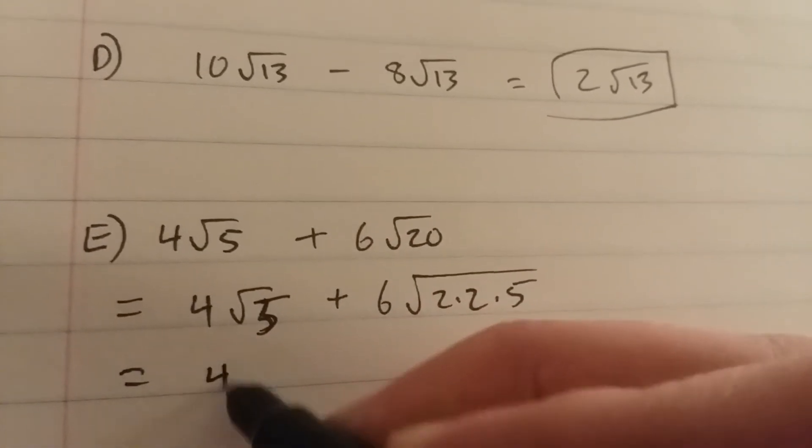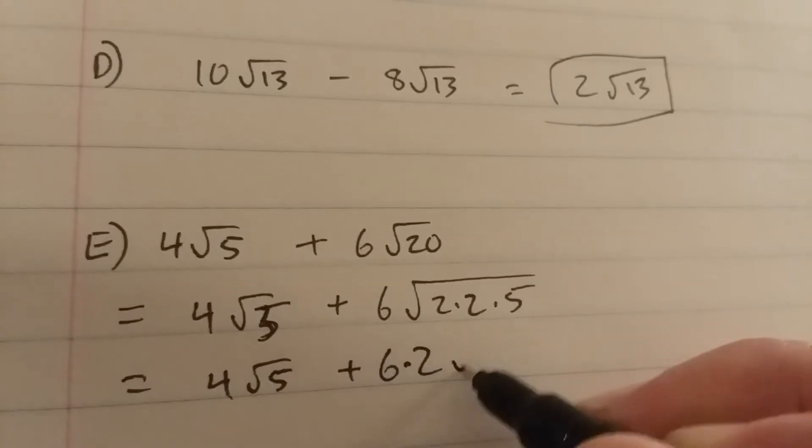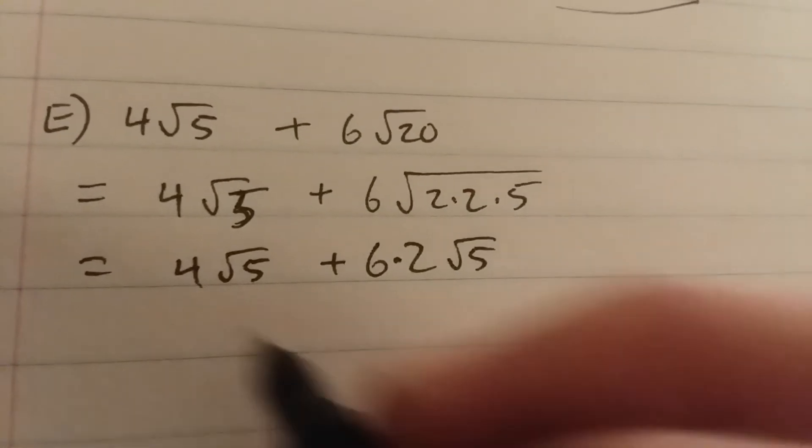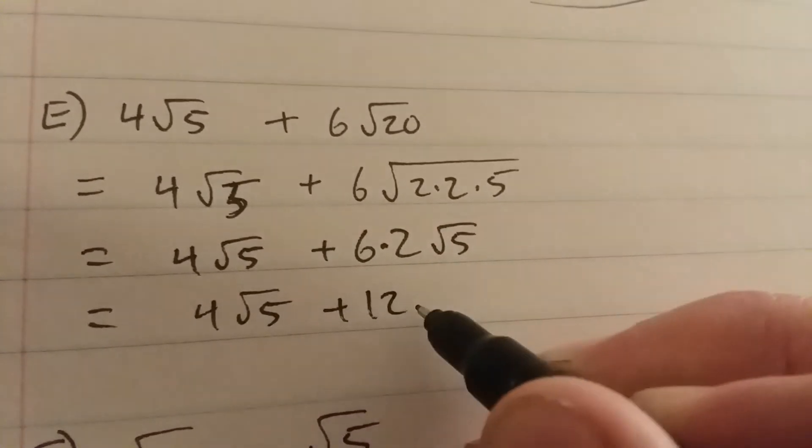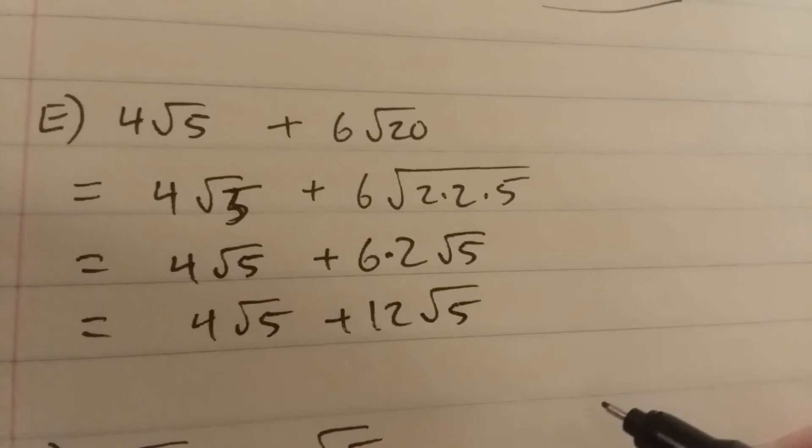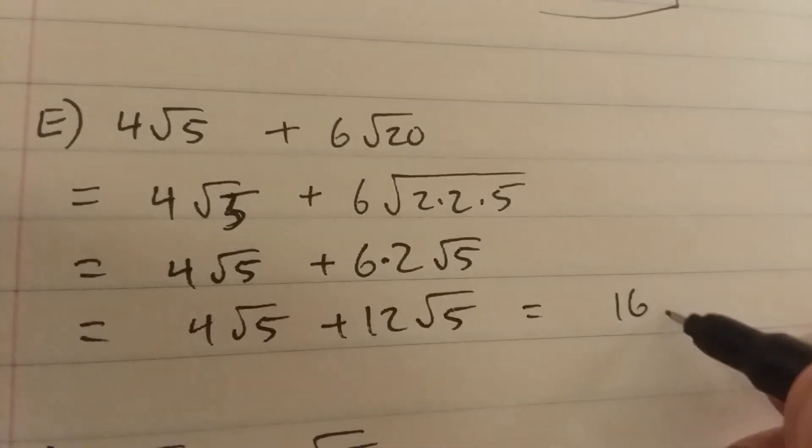All of this is 4 root of 5 plus 6 times 2 times the square root of 5, which is 4 root 5 plus 12 root 5. 4 plus 12 is 16, so the final answer is 16 root 5.